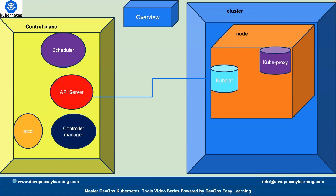Also inside the node we have a container runtime — it can be Docker or containerd, but nowadays containerd is the one that's being used. So that's just the nomenclature of the control plane, the cluster, and the node — the most important elements of each. I hope you liked the video, see you guys in the next one, thanks.